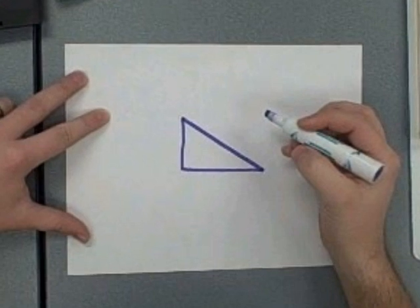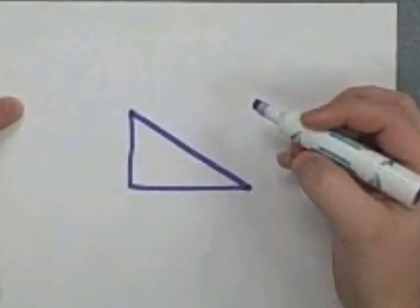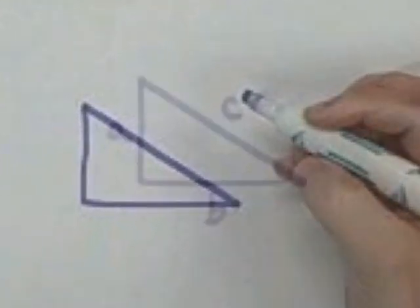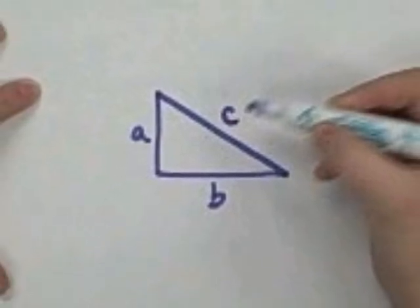I need to find this missing side length. I'll switch to hardcopy to write down my measurements. Next, I'll label my sides and make sure that C is on the hypotenuse.